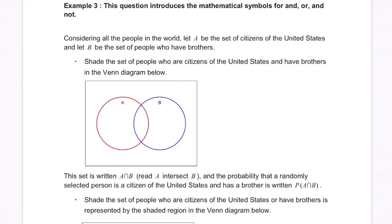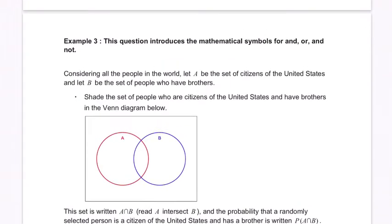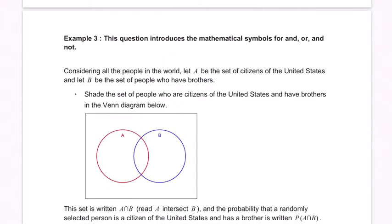Okay, we've got Example 3 right here. In this section they make sure to introduce the symbols for intersection, union, and not.